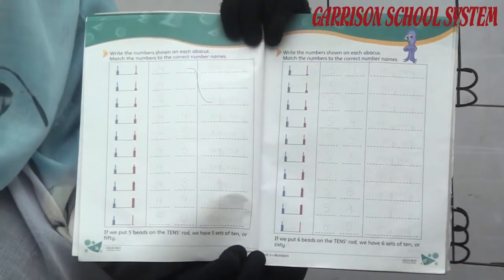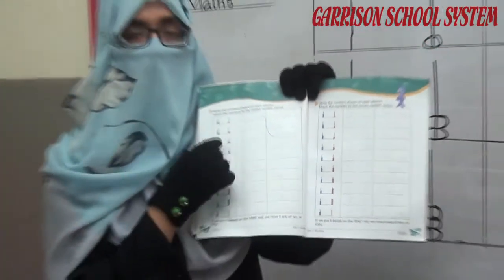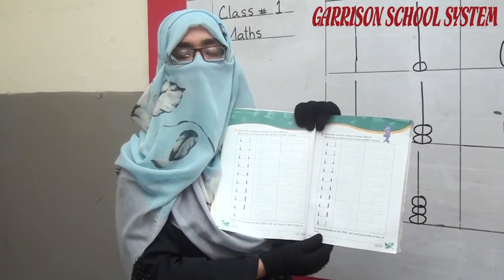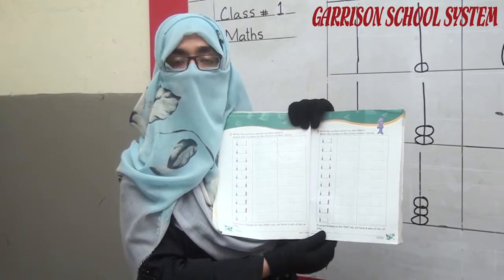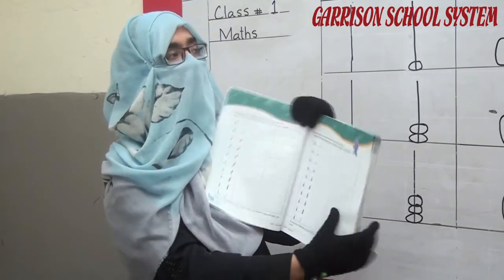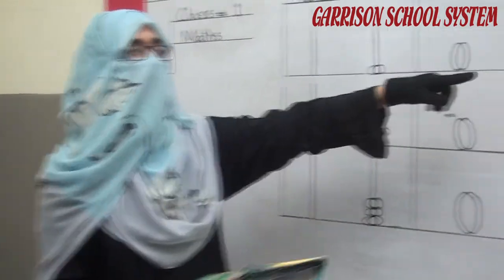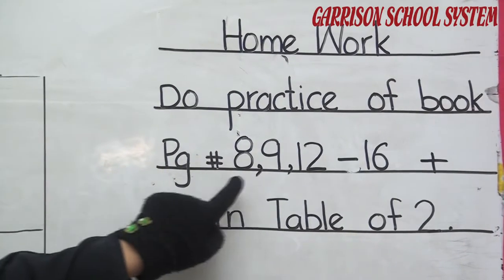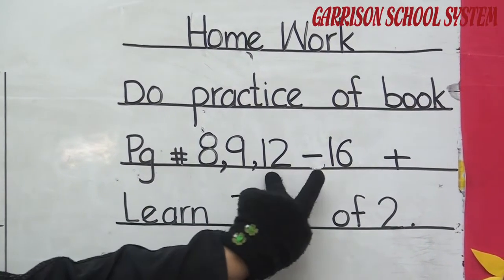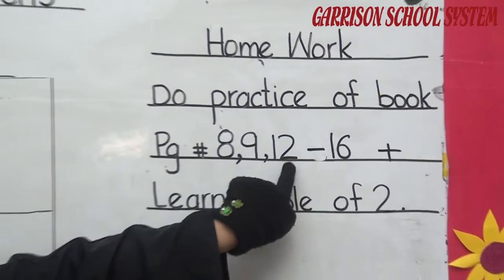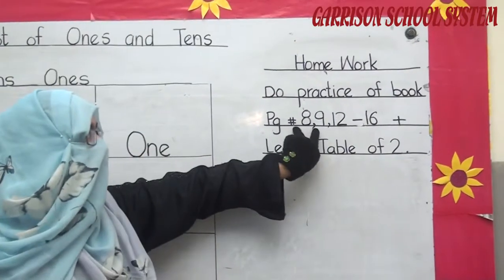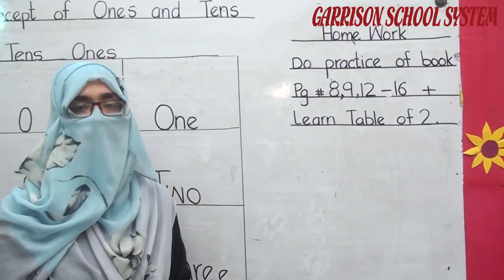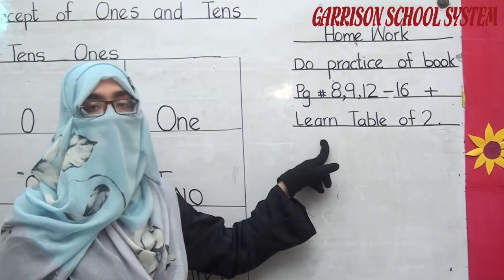These pages you have done at home. The procedure is the same. Also learn the spelling of the counting numbers. As I write your homework on the board: do practice of book pages 8, 9, and 12 to 16. Write the counting and number names. And learn the table of two again.